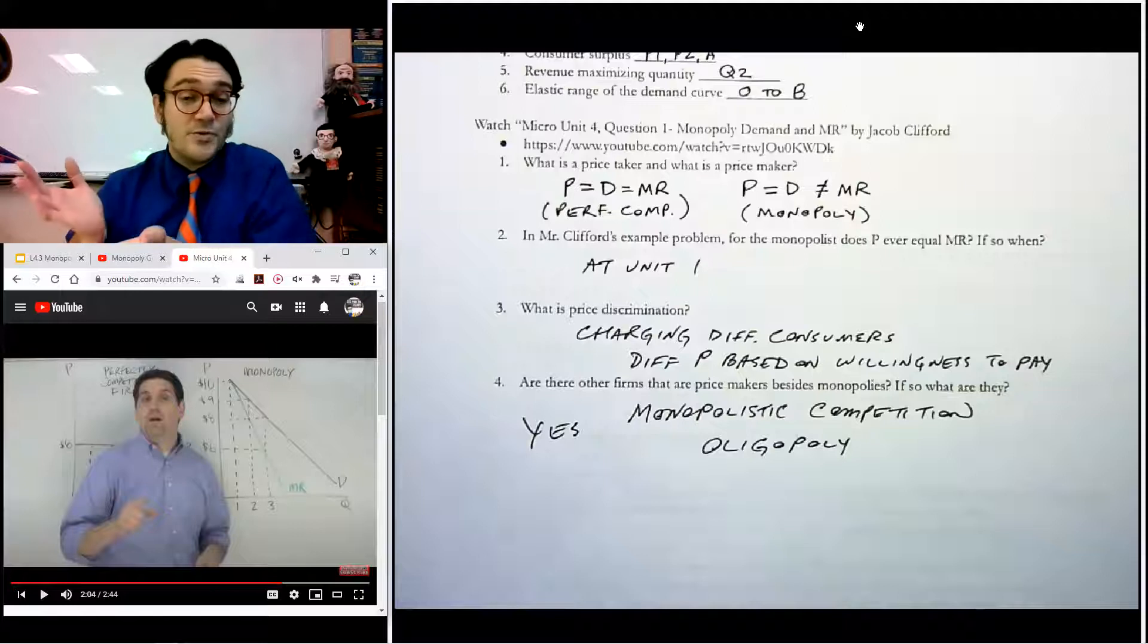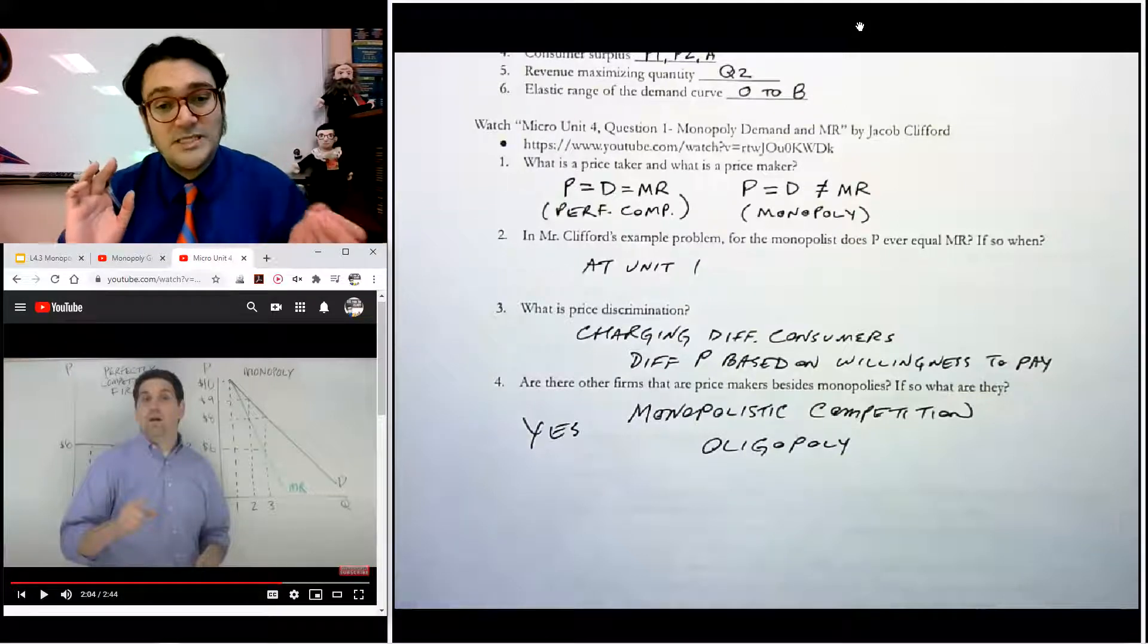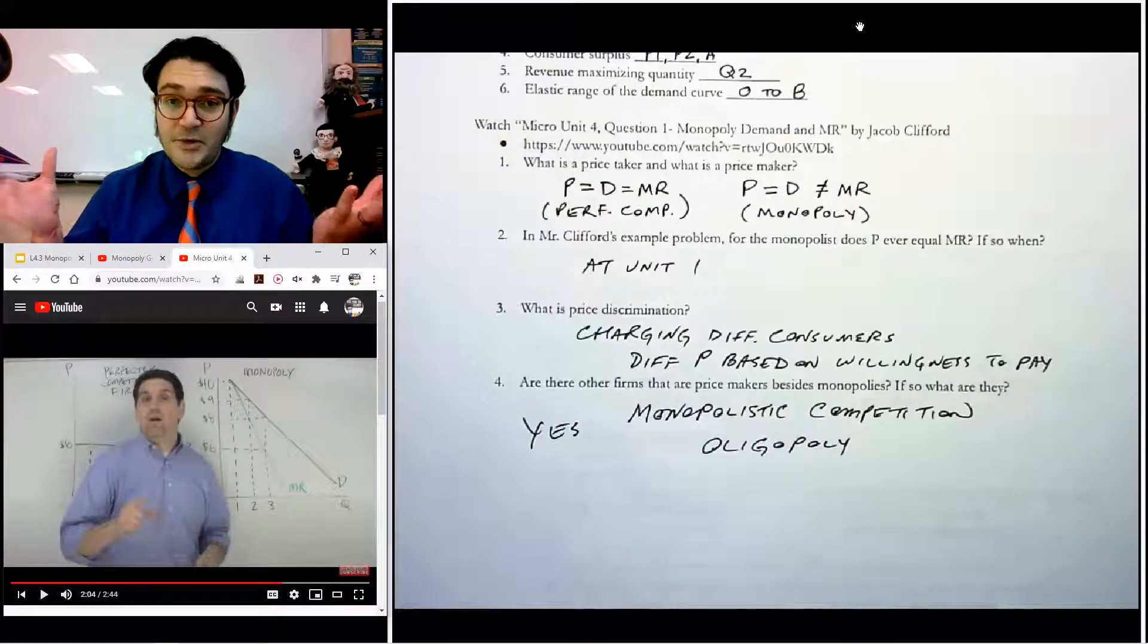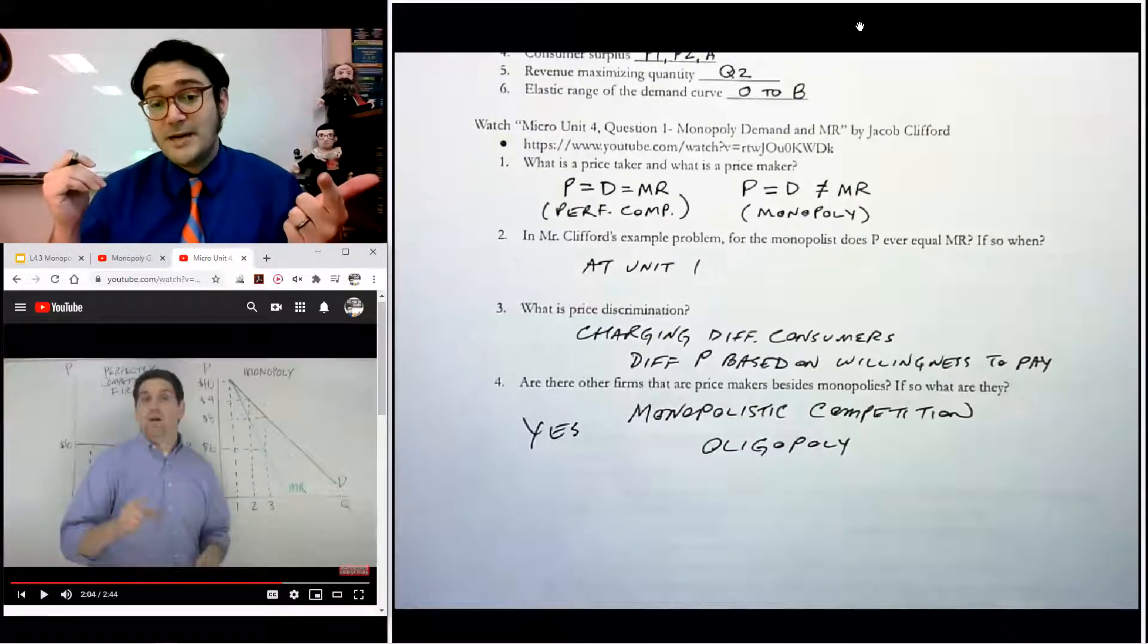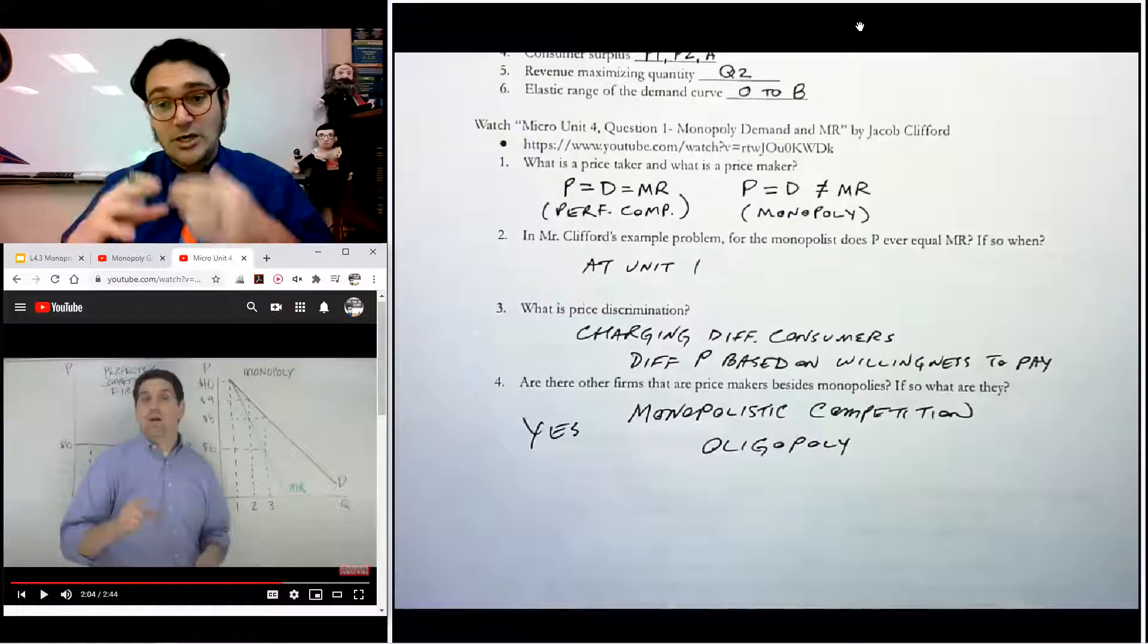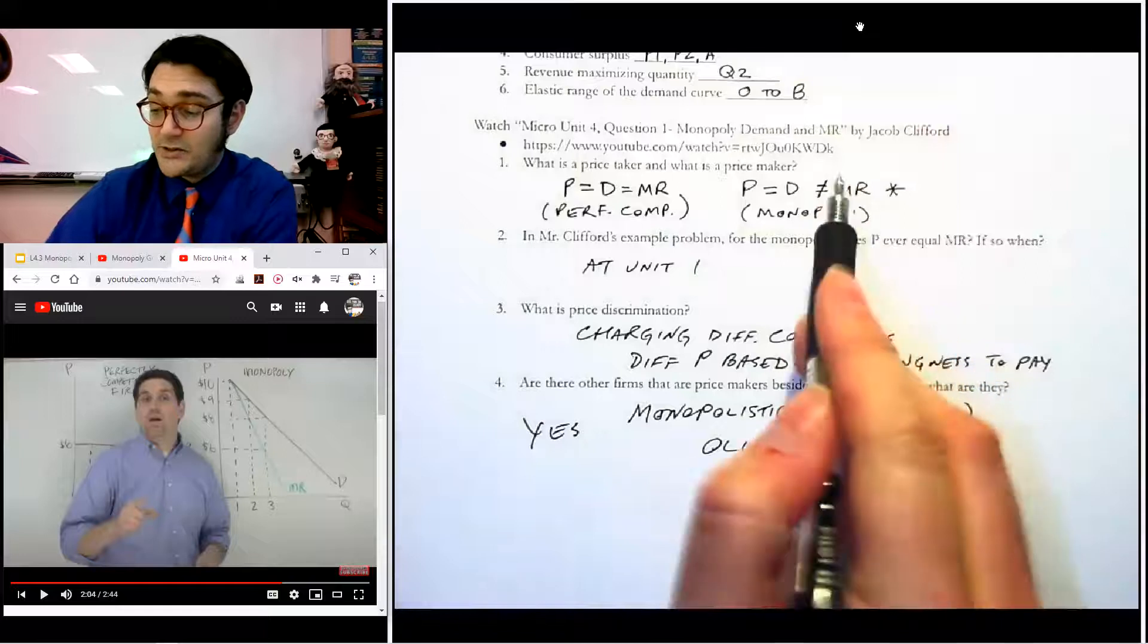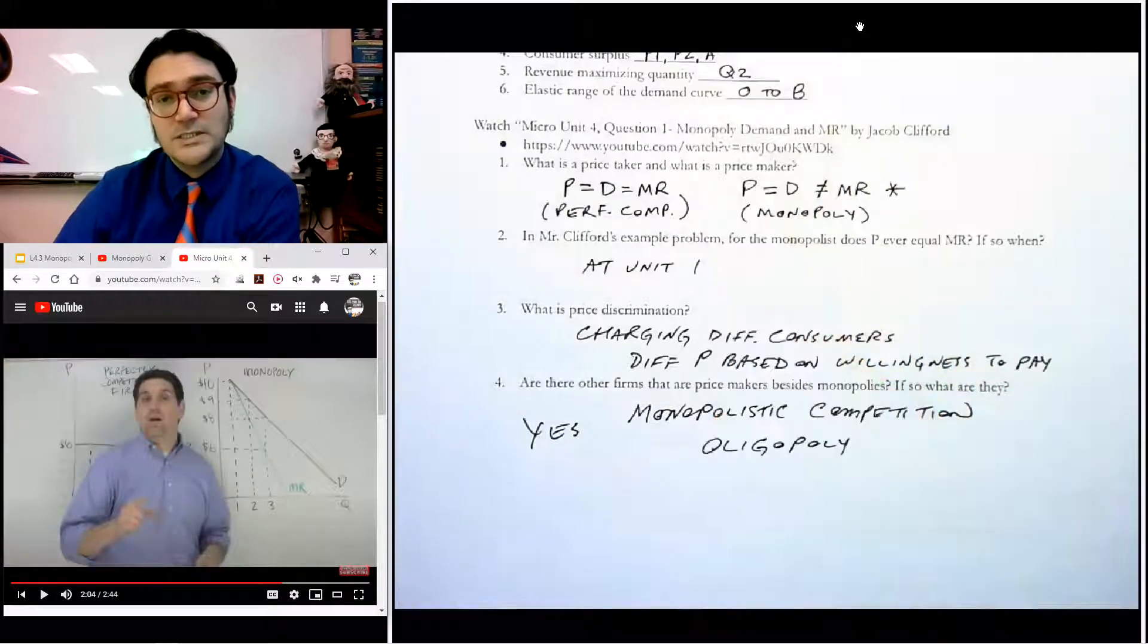The last question on here, are there other price makers? He says it really fast towards the end. There are two others. All of the imperfectly competitive markets are. So monopolies, monopolistic competition, and oligopolies are all what we call price makers, where this is the key characteristic: the marginal revenue no longer equals the price.